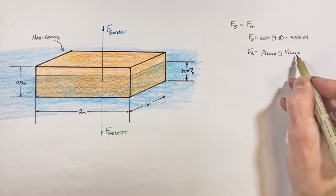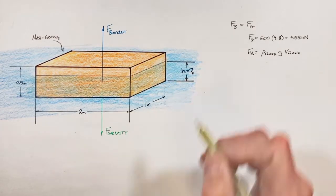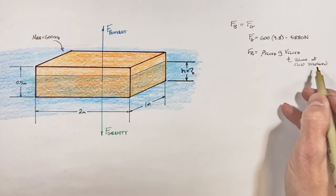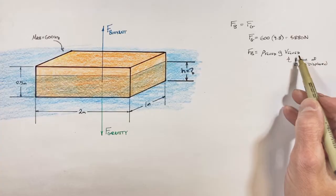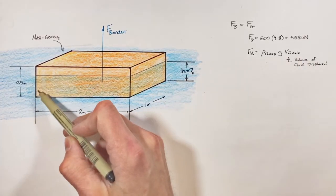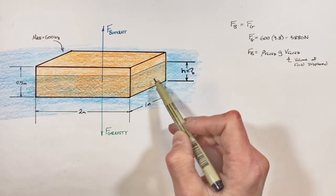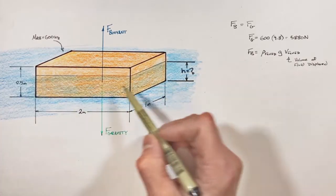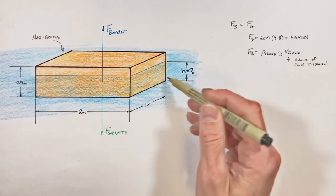to gravity, and the volume of the fluid displaced by the block. And it's really important to recognize that this volume of fluid is not the volume of the entire block. It's only the volume of fluid which is going to be displaced by the part of the block which is beneath the water line or submerged within the water.